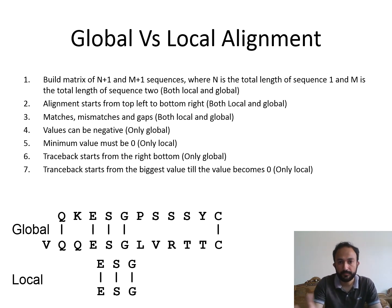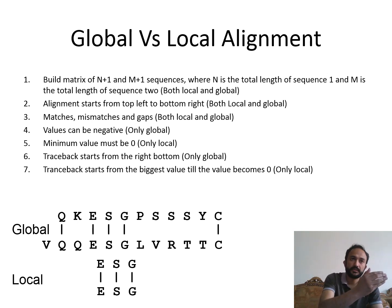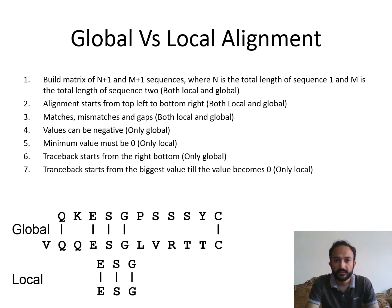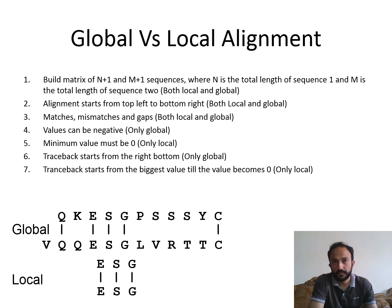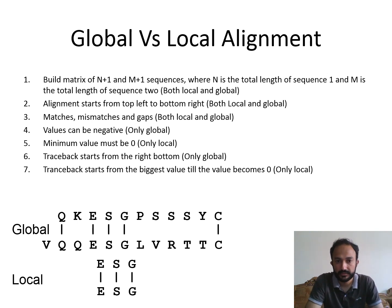Point number one: similar to global alignment, we have to make a matrix of n plus one and m plus one. If these are two sequences n and m we are comparing, for example if the length of sequence n is five, then we will build a matrix of six rows.